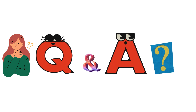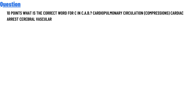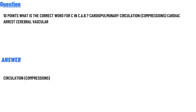Our today's question is worth 10 points. What is the correct word for C in C.A.B.? The options are: cardiopulmonary circulation, compressions, cardiac arrest, cerebral vascular. The correct answer to the question is circulation and compression.